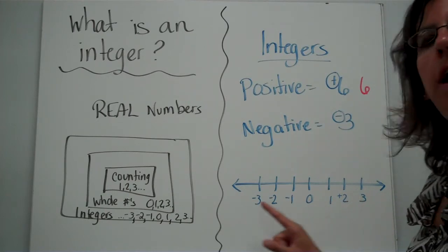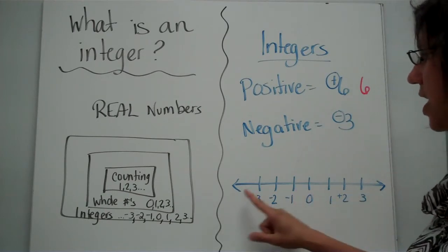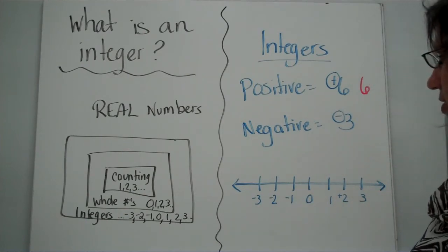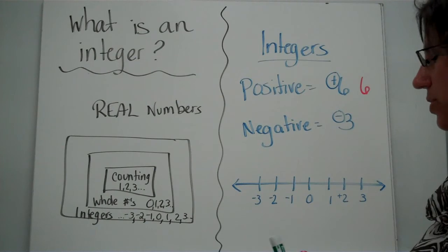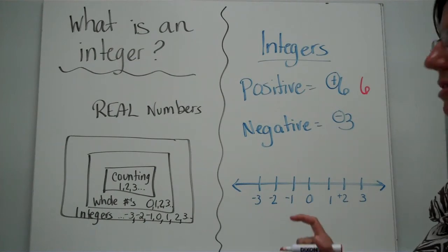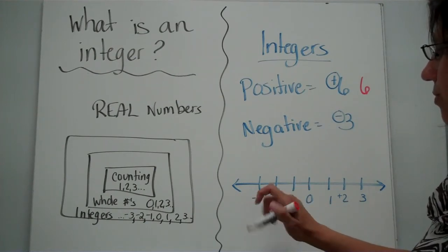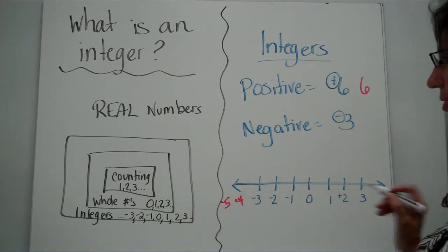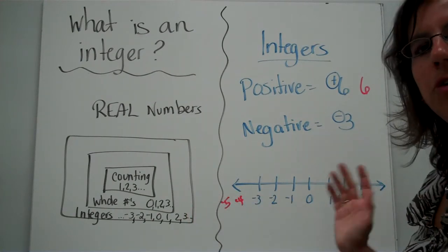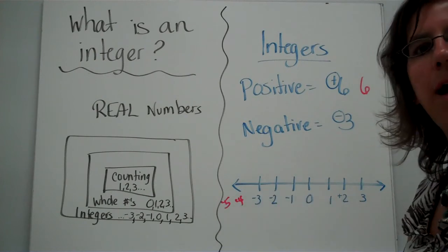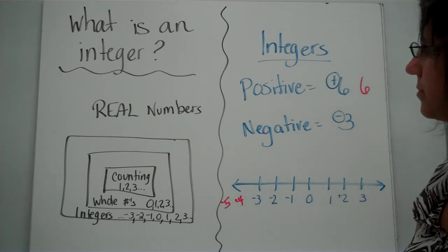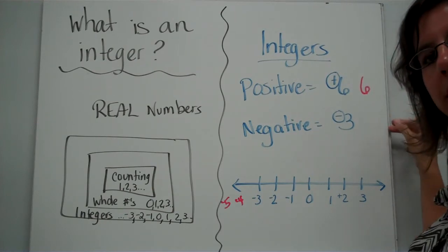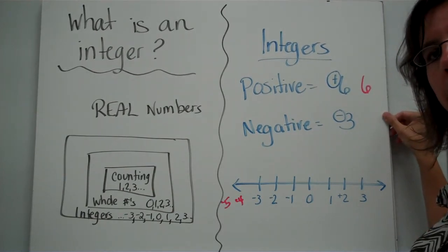Here you have a number line. Notice the arrows in both directions — those numbers go on forever and ever in both directions. Notice how these numbers are counting backwards: negative one, two, three, negative four, negative five, and that would continue. It's almost like you could fold this in half and they would be on top of each other. If you need to pause the video to write that down, go ahead and do so, otherwise I'm going to carry on.